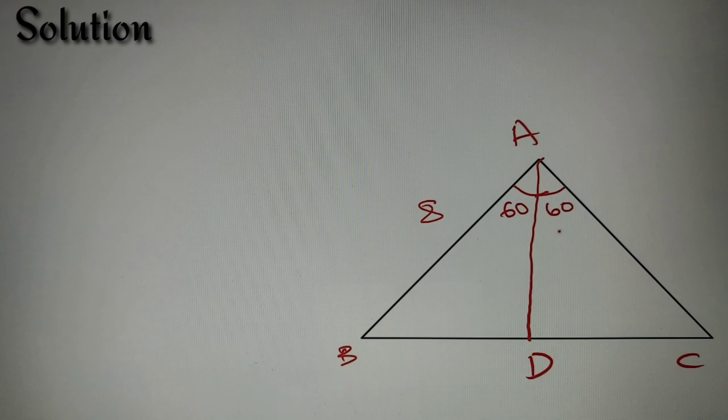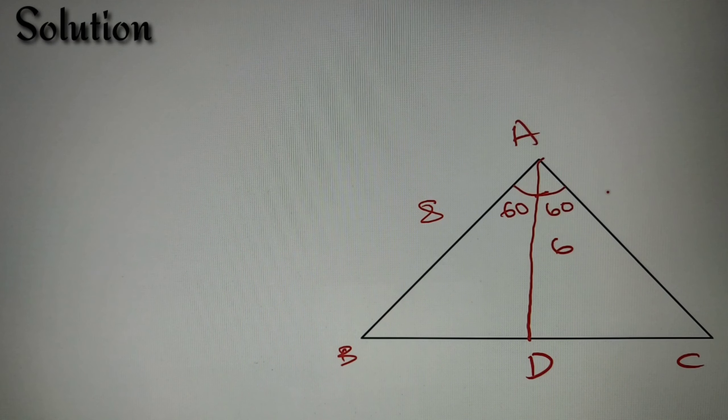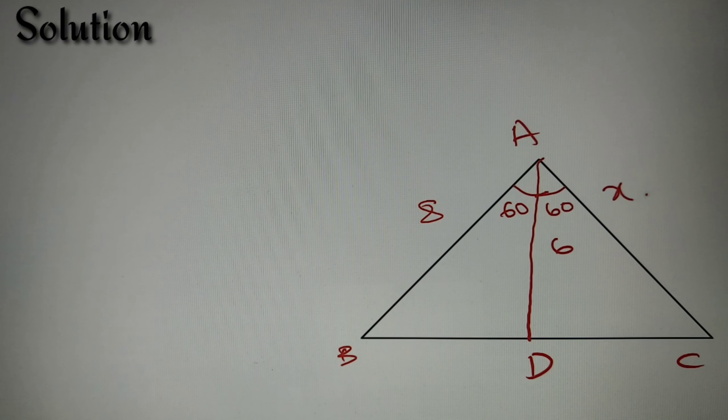Now we are given that the length of AB is equal to 8 and the length of AD is equal to 6, and we have to find the length of AC. Now let's take the length of AC as X.